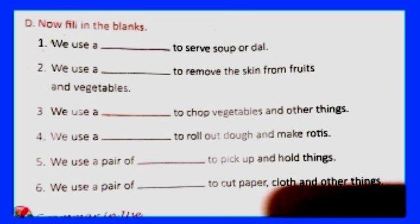Then we use a peeler to remove the skin from fruits and vegetables. Next, what do we use to chop vegetables and other things? The answer will be chopping board.